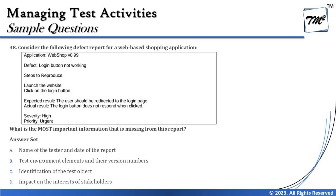The last question of Chapter 5 is question 38. It says: consider the following defect report for a web-based shopping application. Application name: WebShop, version 0.99. Defect: login button not working. Steps to reproduce: launch the website, click on the login button. Expected result: the user should be redirected to the login page. Actual result: the login button does not respond when clicked. Severity and priority are provided. What is the most important information missing from the report? I always get a lot of comments on these types of questions.